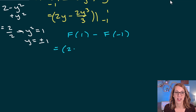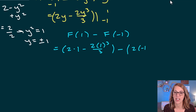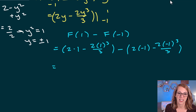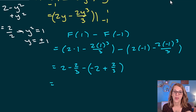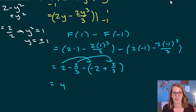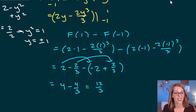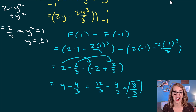Plugging in: at 1, I get 2(1) minus 2(1)³/3; at negative 1, I get 2(−1) minus 2(−1)³/3. This simplifies to 2 minus 2/3, minus (−2 plus 2/3). Combining: 2 minus (−2) is 4, and −2/3 minus 2/3 is −4/3. Converting 4 to 12/3, then 12/3 minus 4/3 gives the area between the two curves: 8/3.